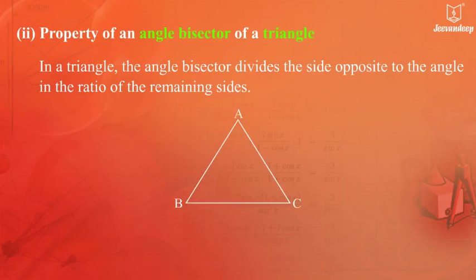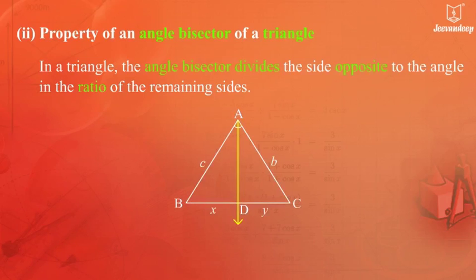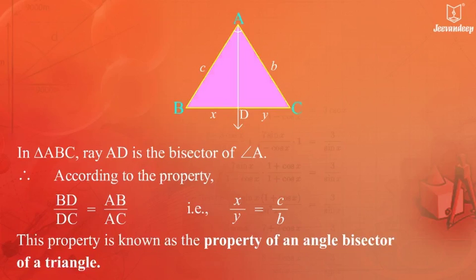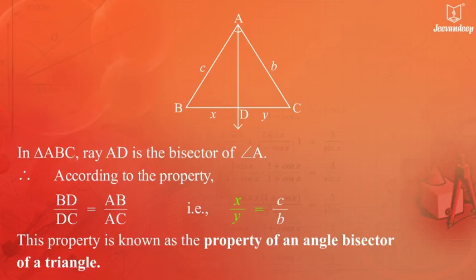In a triangle, the angle bisector divides the side opposite to the angle in the ratio of the remaining sides. In triangle ABC, ray AD is the bisector of angle A. Therefore, according to this property, BD upon DC equals AB upon AC. This is known as the property of an angle bisector of a triangle.